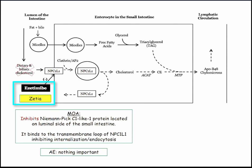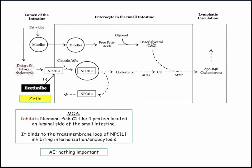Ezetimibe was incidentally discovered while looking for something else — it was found to lower cholesterol by blocking absorption of cholesterol via the Niemann-Pick C1-like 1 protein located in the intestine. The bottom line is you're not absorbing cholesterol. You rarely see questions on this drug. It has essentially no side effects — it's a nice add-on drug. It lowers cholesterol when added to a statin.